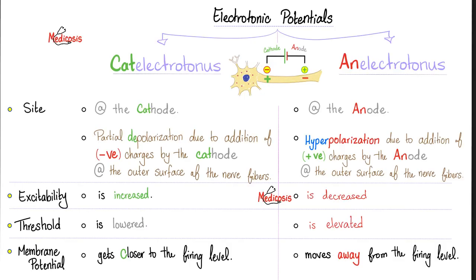Let's go back to square one. Why did we call cations, cations? Because these are ions that are attracted to the cathode. The cathode is negative — that's why it attracts the positive ions. Why do we call anions, anions? Because they are attracted to the anode. The anode is the positive pole; therefore, it attracts the negative charges — anions. And that's why we have two types of electrotonous: cat electrotonous and an electrotonous.